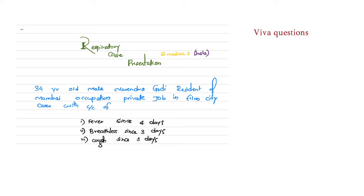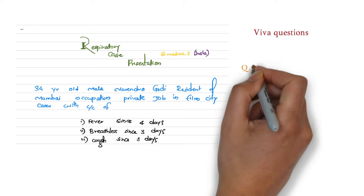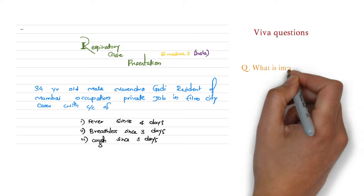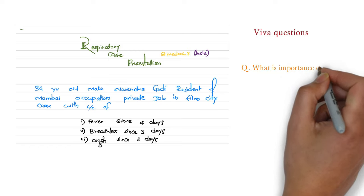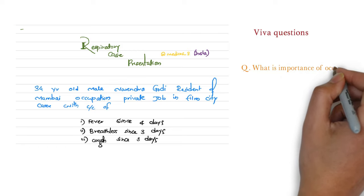Introductory part: 34-year-old male, Narendra Godi, resident of Mumbai, occupation is private job in film city, came with chief complaint of — this is the introductory part where you write age, sex, resident of, and occupation. My first question is: what is the importance of occupation?